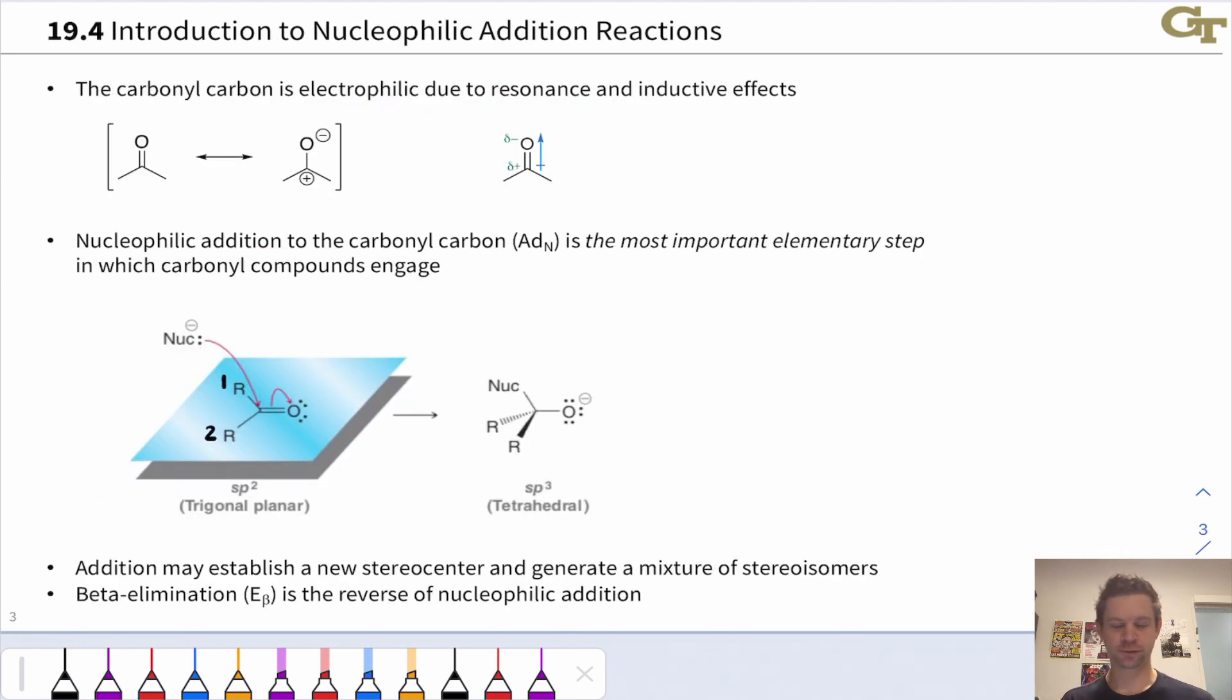Recall that the second most important resonance form of the carbonyl group places negative charge on the carbonyl oxygen and positive charge on the carbonyl carbon. This positive charge on the carbonyl carbon really emphasizes that that atom is a good electrophile. It wants to accept a pair of electrons from a nucleophile. This is due both to resonance and inductive effects, due to the polarization of the CO bond toward the more electronegative oxygen atom.